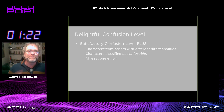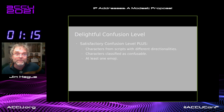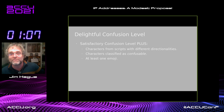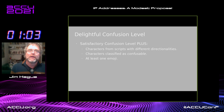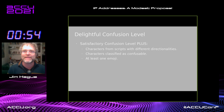Building even further upon that, to our maximum delightful confusion level. That's satisfactory confusion, plus characters and scripts with different directionalities, characters classified as confusable — yes, Unicode has a specific category of confusable characters, this is brilliant — and at least one emoji. Now, this means that there are multiple possible encodings for a single address, so you should pick a random one to further enhance the general level of confusion.